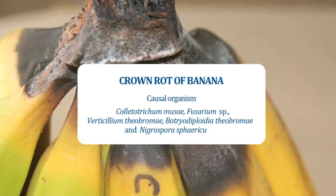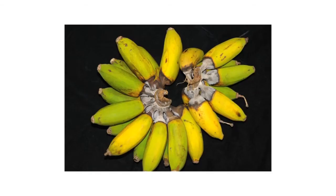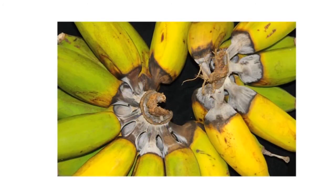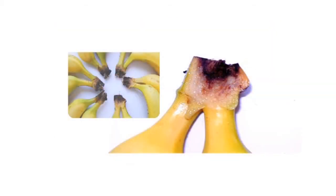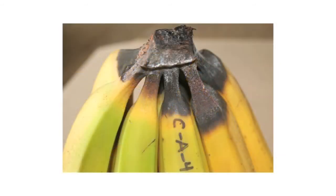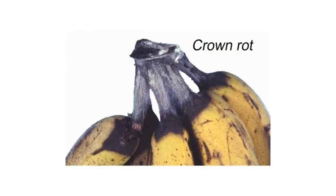The next important disease is crown rot of banana. The organisms associated with this disease are Colletotrichum musae, Fusarium species, Verticillium theobromae, Botryodiplodia theobromae and Nigrospora sphaerica. The rot begins with mycelial development on the surface of the crown, followed by internal development that might later affect the peduncle and the fruit. The bananas may detach from the peduncle in cases of severe infection. Crown rot leads to softening and blackening of tissue at the site of the wound left when the cluster was cut from the bunch.